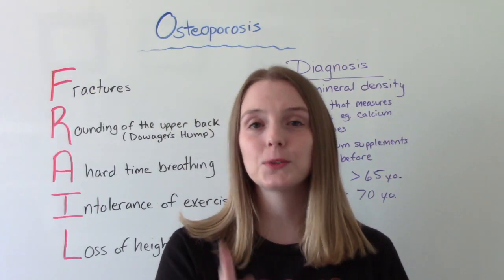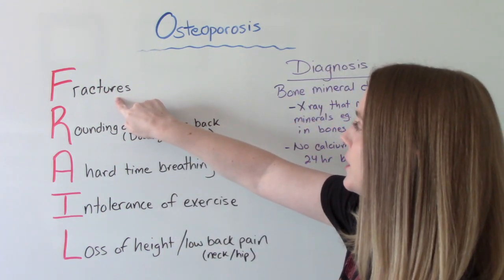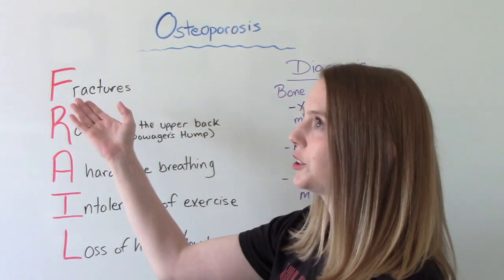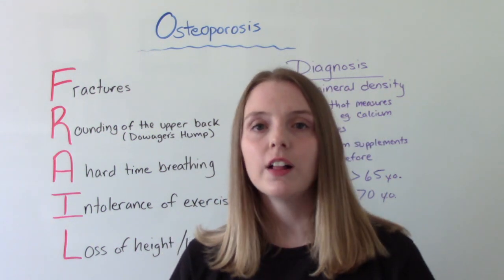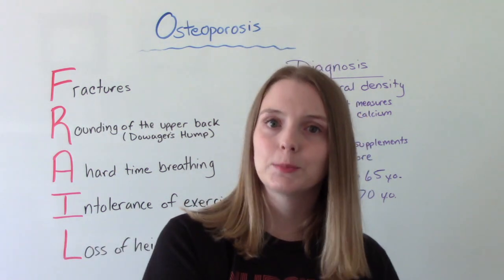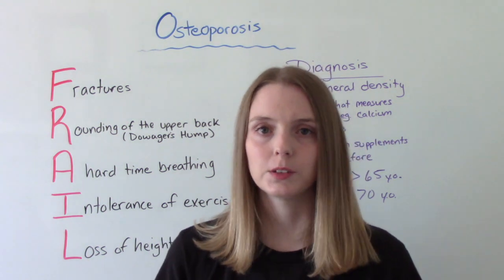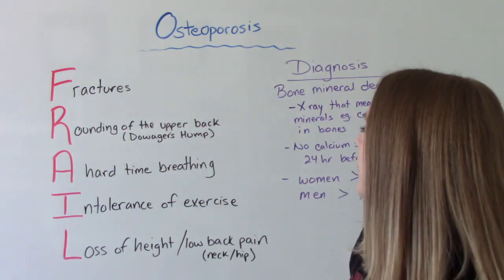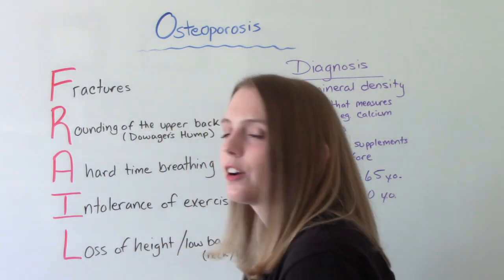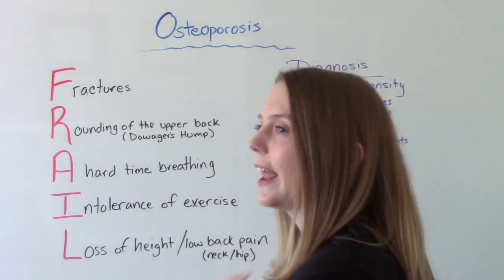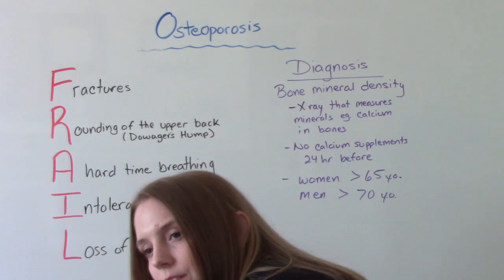When it comes to signs and symptoms, a tool we can use to remember them is FRAIL — your bones are weak and frail. The F stands for fractures: people with osteoporosis are at much higher risk of having a fracture. They may not know they have osteoporosis, but after a fall and a fractured wrist they get worked up for it. R stands for the rounding of the upper back, known as Dowager's Hump. This is different than kyphosis — kyphosis is due to the spine causing a hunchback, whereas Dowager's Hump involves rounding plus a slumped posture, almost like the person has shrunk and then curved.